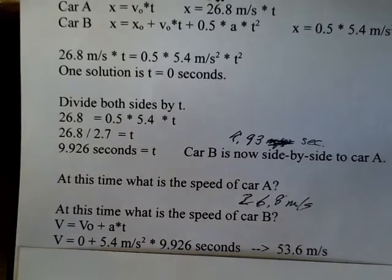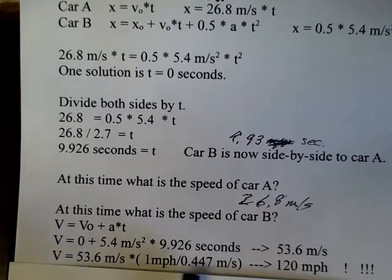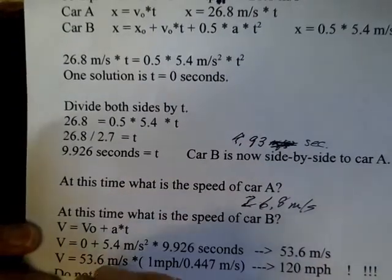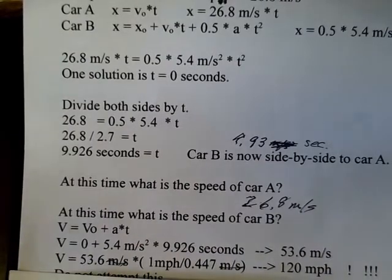For students in the United States, you may not have much comprehension of what this speed is. So let's convert it to miles per hour. We do this conversion, one mile per hour is equivalent to 0.447 meters per second. So to cancel off the meters per second, the conversion factor, the meters per second number has to be in the denominator. You divide 53.6 by 0.447, and you find 120 miles per hour.